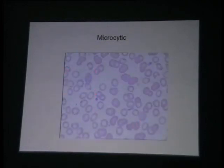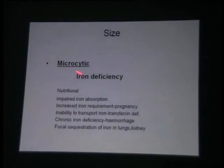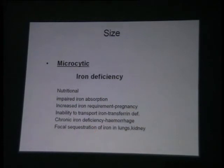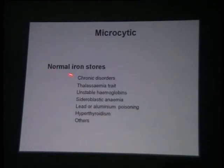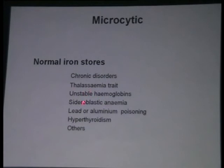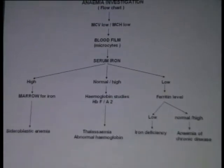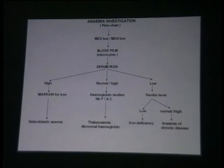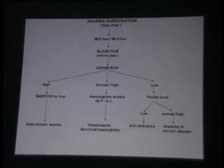Microcytic hypochromic anemia can be due to a number of reasons. Iron deficiency is the commonest reason. It may also be due to other known causes we are very familiar with. Alternatively, it may be microcytic but not iron deficiency — that is usually anemia of chronic disorders. Thalassemia traits are very common and one must look for them, along with some rare types of microcytic anemia. That is the flowchart for approaching a patient with microcytic hypochromic anemia.